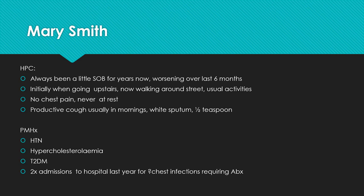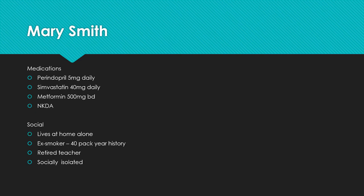In terms of her past medical history, she's got hypertension, high cholesterol, type two diabetes, and she's had two admissions to hospital in the last year for what she thinks were chest infections, and had antibiotics for them. Her medications include perindopril, a statin, and metformin for her diabetes, and she has no allergies. Socially, she lives at home alone. She's an ex-smoker with a 40-pack-year history — good on her for quitting. She's a retired teacher and is quite socially isolated. This is the first time she's seeing you, the GP, in about a year.